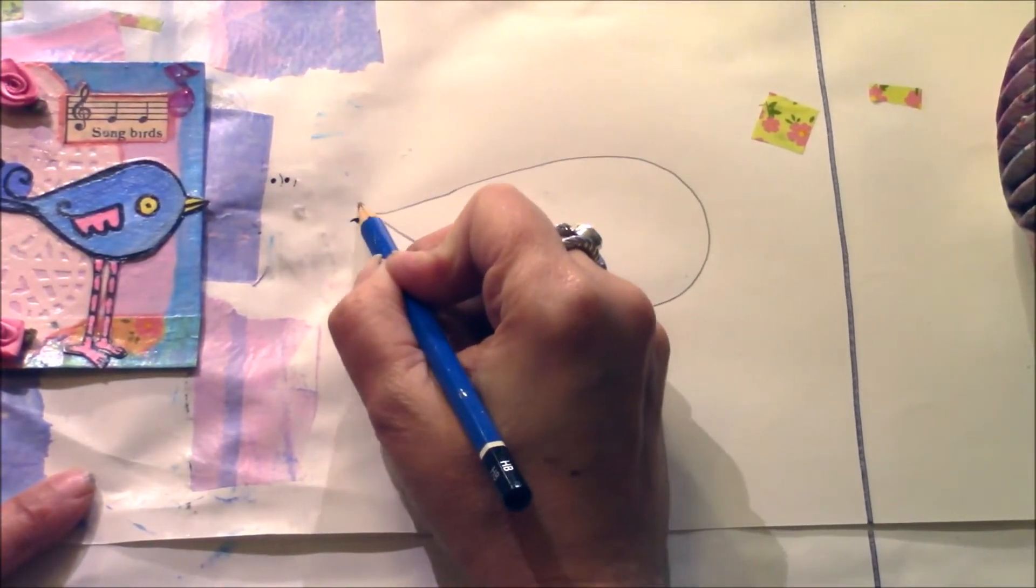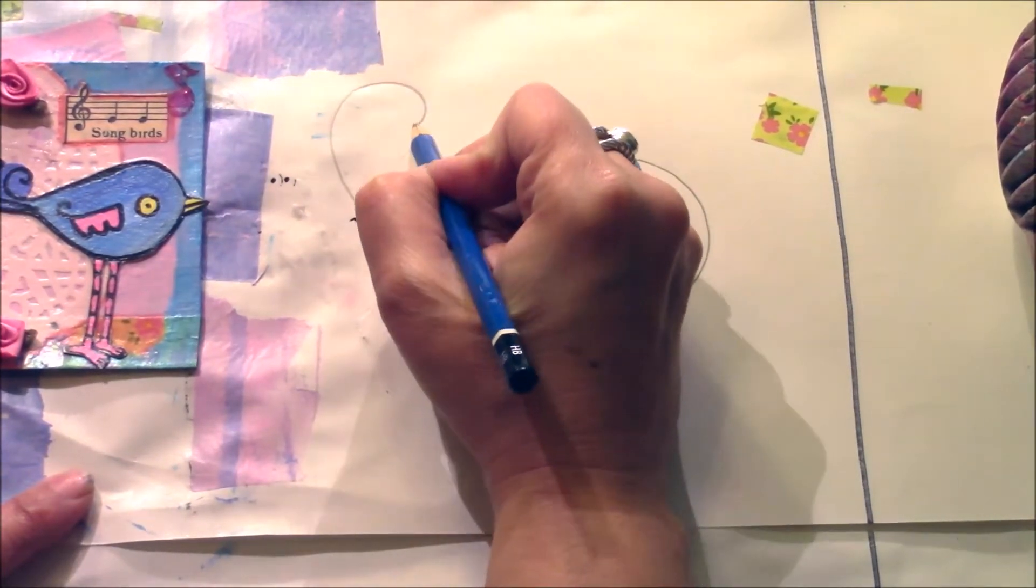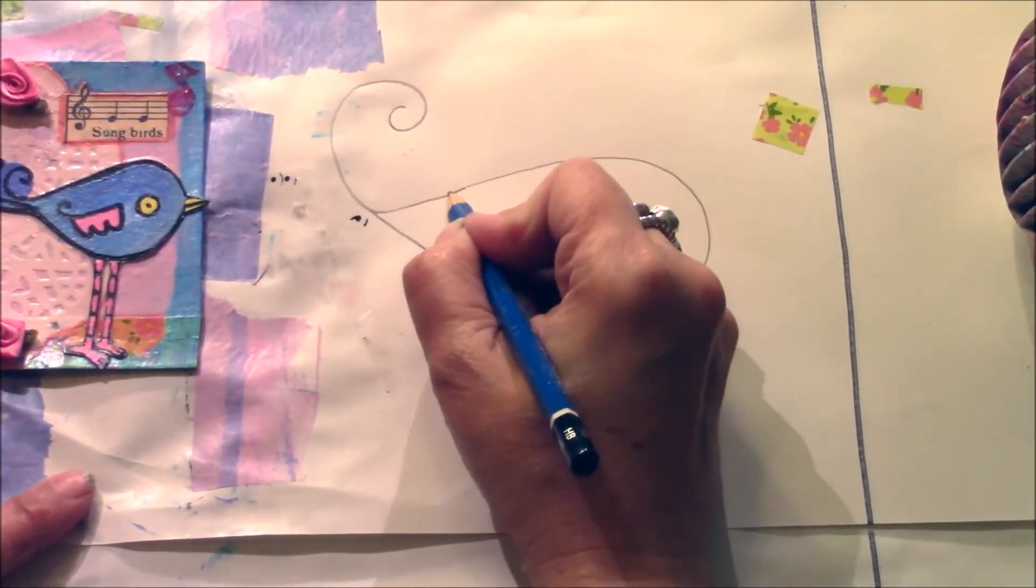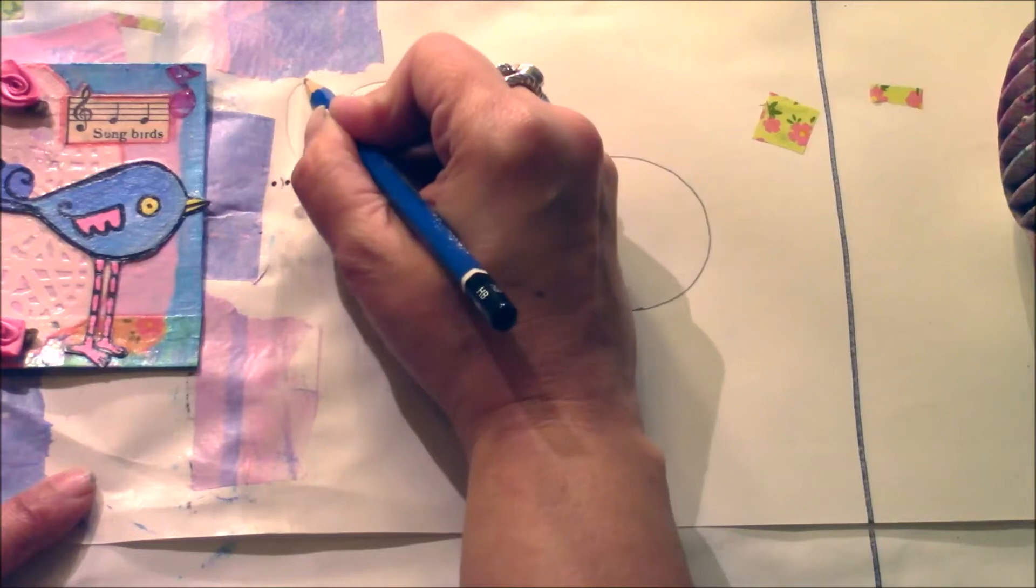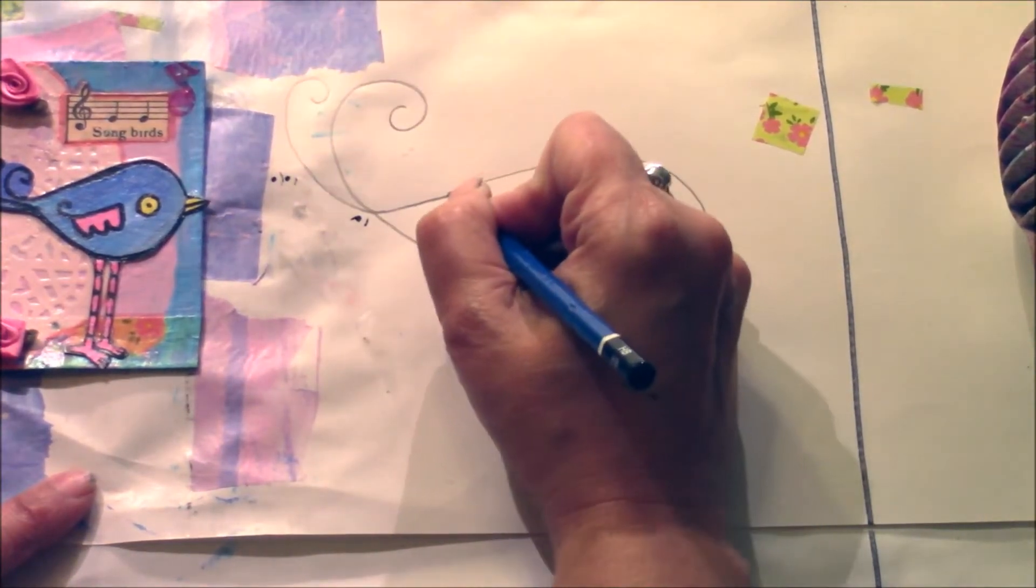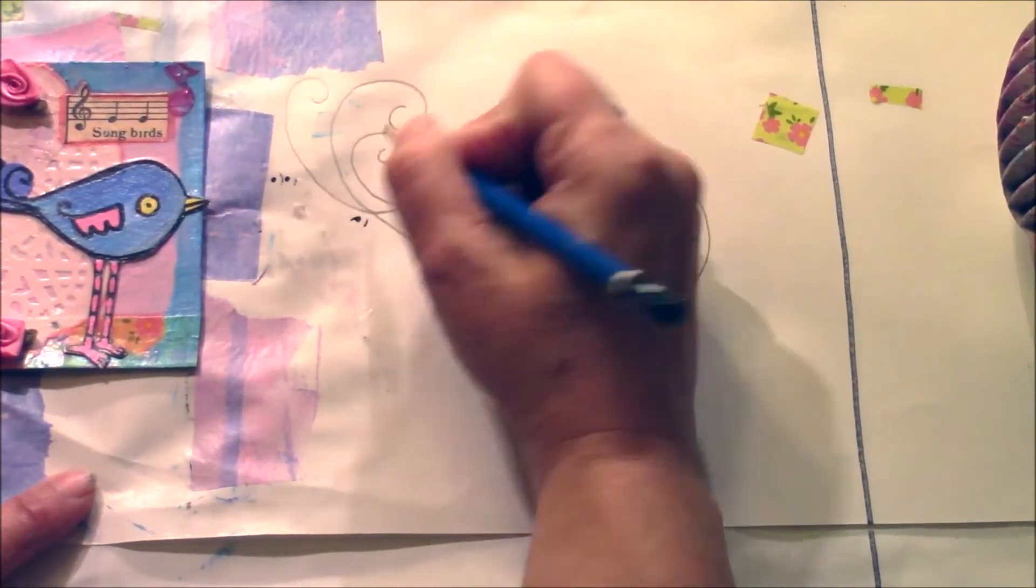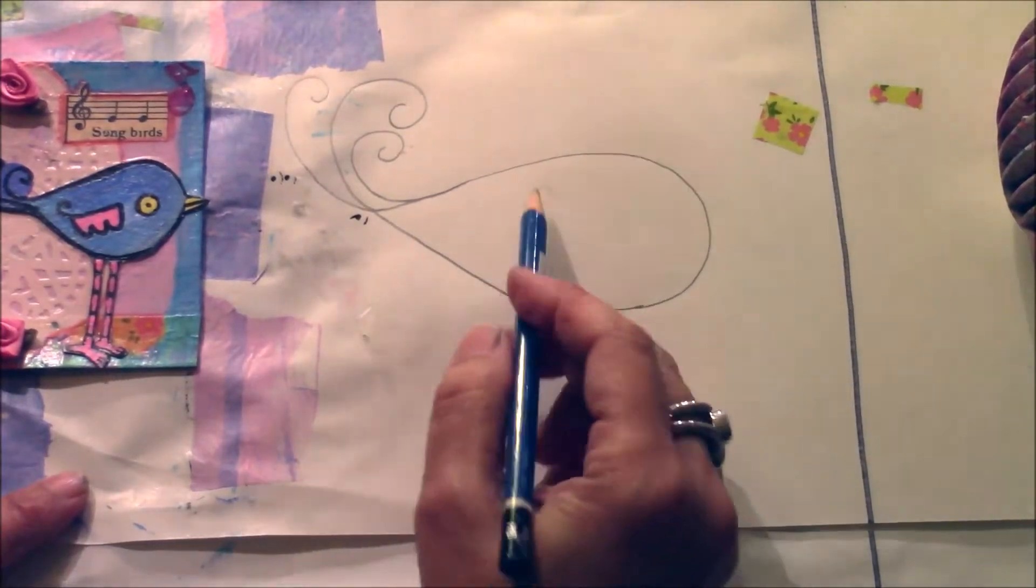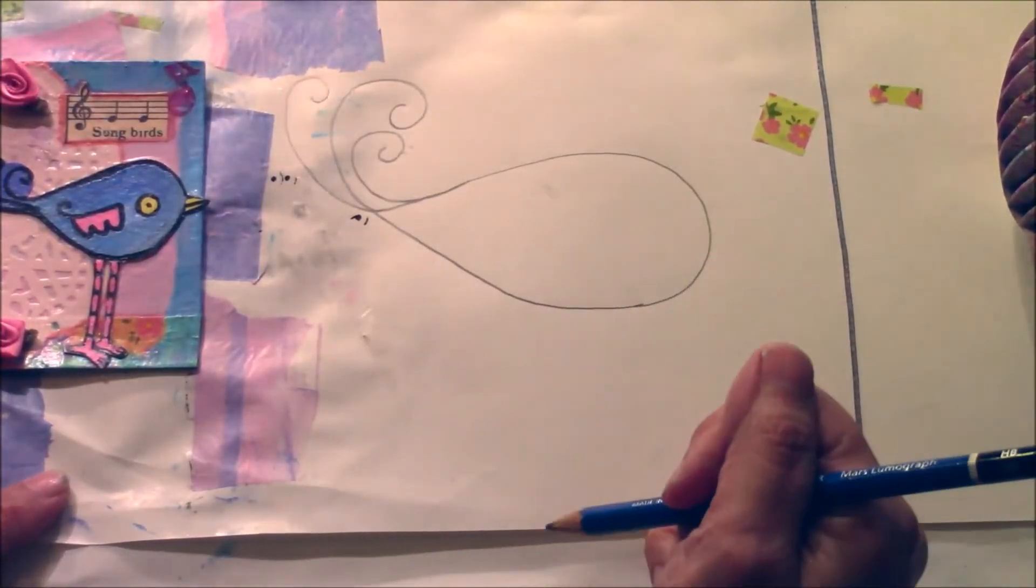And then you're going to curve up for the tail feathers. Just like that. And they can be lower or higher or whatever.